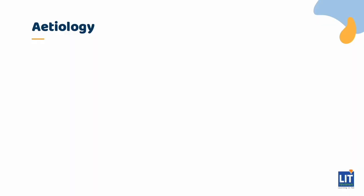While it is poorly understood, the development of biliary atresia is likely multifactorial, including viral infection, genetics, anatomical remodeling, and immunologically-mediated inflammation. One possible etiology is intrauterine or perinatal viral infection.